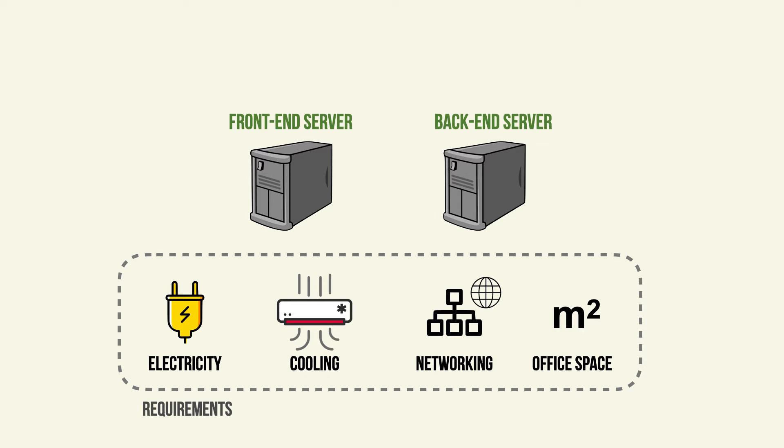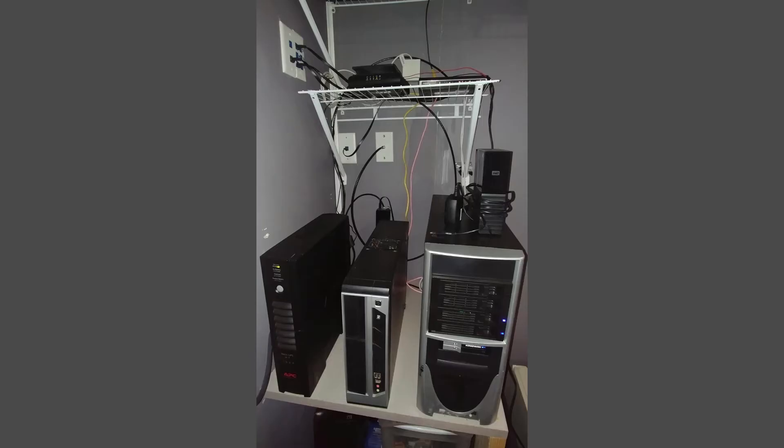With these requirements in place, you can run your front-end and back-end code, and your website is online and reachable by your customers. Here's a very simplified image of what this infrastructure could look like with your two front-end and back-end servers and the simple network infrastructure — connecting things into wall sockets and wall ports.